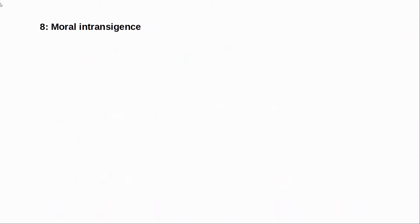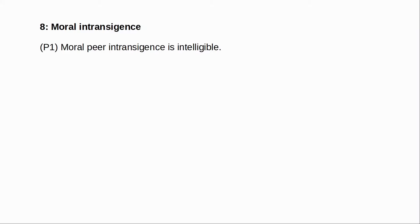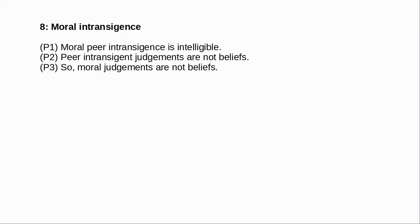Let's turn to the final argument. This one isn't discussed by Enoch, but it's an interesting argument and has received some discussion in the recent literature. This argument appeals to the appropriate response to moral disagreement, and it's proposed by Richard Rowland in his article 'The Intelligibility of Moral Intransigence.' Mark Calderon, in his book on moral fictionalism, gives a similar argument. Rowland's argument involves two basic claims: first, that moral peer intransigence is intelligible, and second, that peer intransigent judgments are not beliefs. From these two claims it follows that moral judgments are not beliefs — which commits us to a kind of non-cognitivism about moral judgment incompatible with realism. Non-cognitivists hold that moral judgments don't even express beliefs about the world, so the question of whether moral beliefs are true or false doesn't arise.